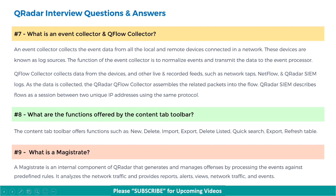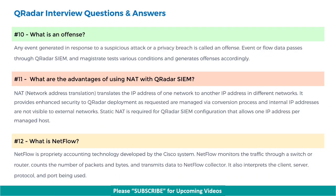Next, what is a magistrate? A magistrate is an internal component of QRadar that generates and manages offenses by processing events against predefined rules. It analyzes network traffic and provides reports, alerts, views, network traffic data, and events. Next, what is an offense? Any event generated in response to a suspicious attack or a privacy breach is called an offense. Event or flow data passes through QRadar SIEM and the magistrate tests various conditions and generates offenses accordingly.